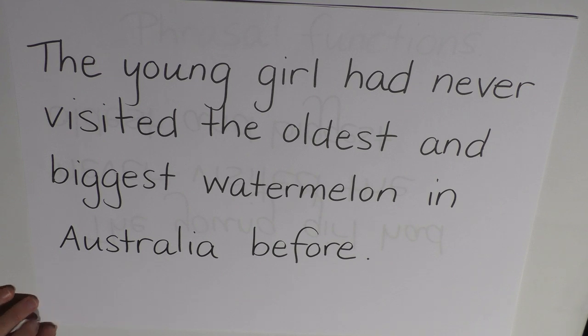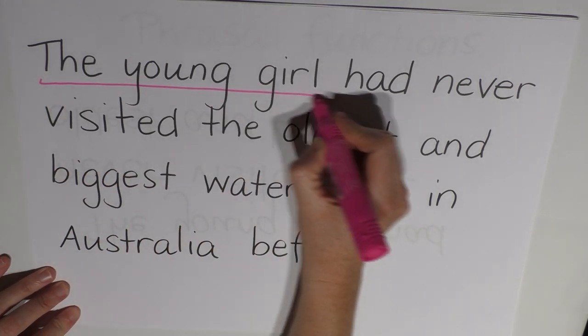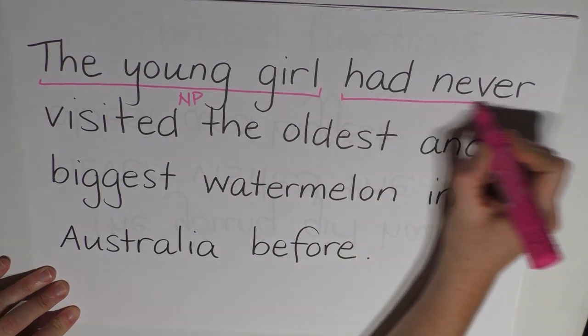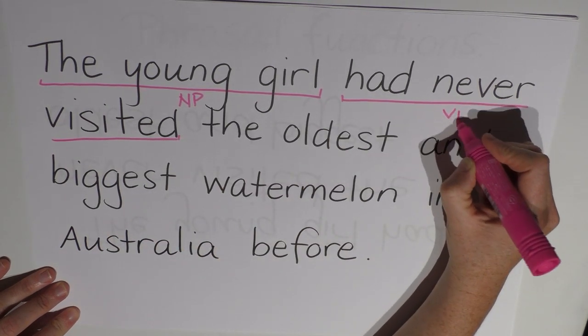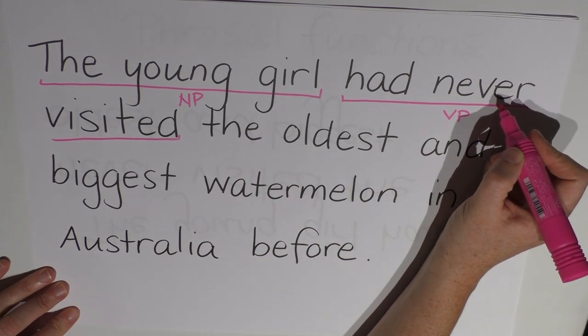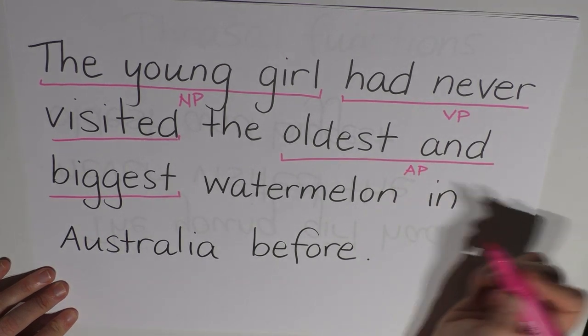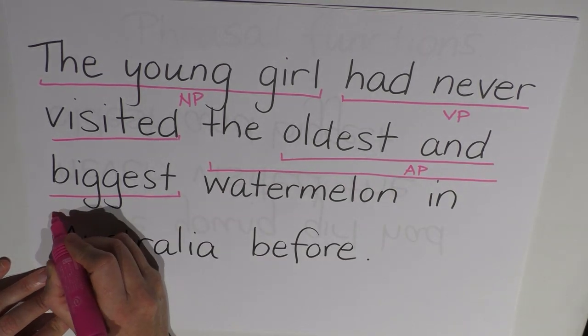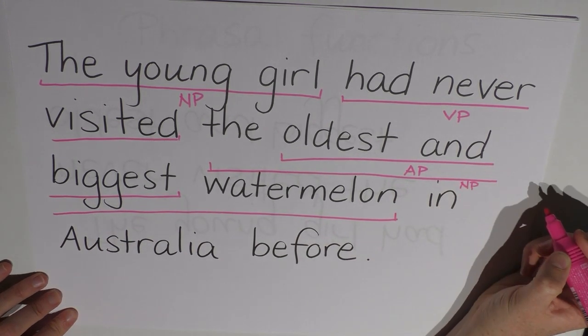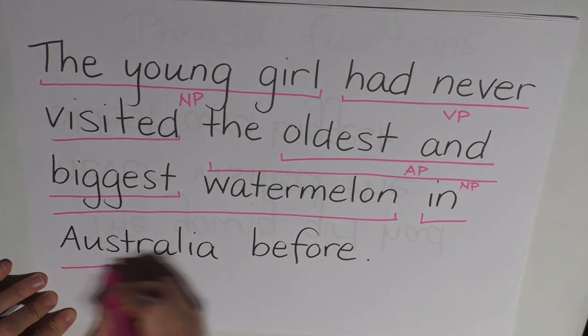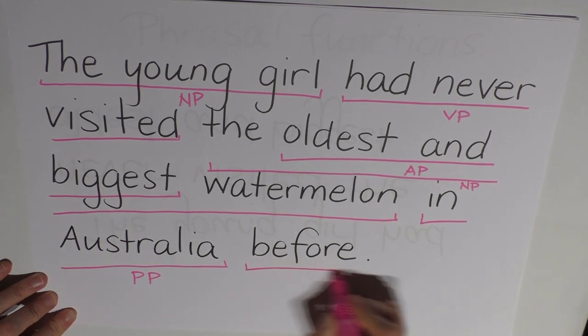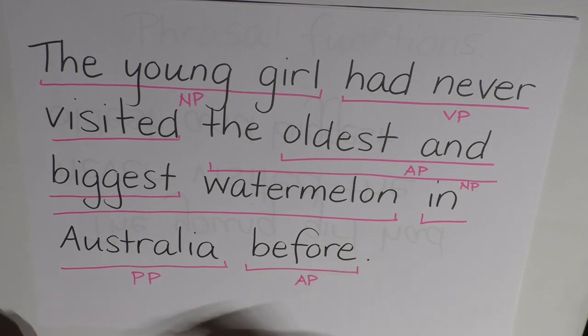Now I'm going to do it for you now. So I have the young girl and that's a noun phrase. Had never visited and that's my verb phrase which includes the auxiliary verb, the lexical verb and the adverb. Now I also have oldest and biggest here as an adjective phrase and that comes within a bigger noun phrase including the and watermelon. So that's a noun phrase that comes around the adjective phrase. We have in Australia which is a prepositional phrase and then of course here we have an adverb all by itself which is of course an adverb phrase because don't forget that a phrase can include one word or more which all point to the head word. So that's an adverb or adverb phrase which is an adverb. So this is how I broke it all up into its phrases and labeled them and if you manage to do that too then you're doing pretty well I think.